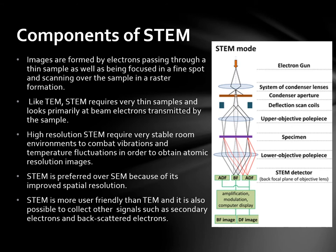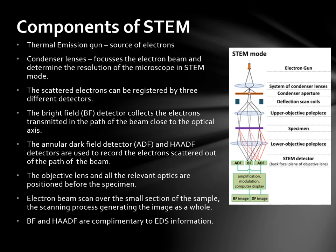Let's discuss some of the components of STEM. The thermal emission gun is the source of the electrons. Then we have the condenser lenses, which focus the electron beam and determine the resolution of the microscope in STEM mode. The scattered electrons can be registered by three different detectors. The Brightfield detector, abbreviated as the BF detector, collects the electrons transmitted in the path of the beam close to the optical axis. The annular darkfield and high-angle annular darkfield detectors are used to record the electrons scattered out of the path of the beam. The objective lens and all the relevant optics are positioned before the specimen, and the electron beam scans over the small section of the sample, generating the image as a whole.